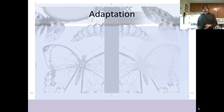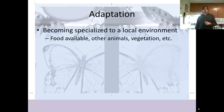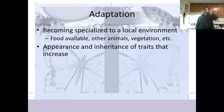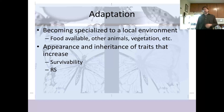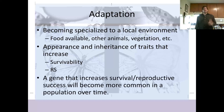Adaptation is also very important in reproductive success. Adaptation is becoming specialized to a local environment — whether specialized to the food available, specialized to compete with other animals, or specialized to the vegetation in which you live. Adaptation is when the appearance and inheritance of traits that increase survivability and reproductive success occurs. When an organism is adapting to its environment, it is developing traits that increase its survivability and reproductive success in that environment.